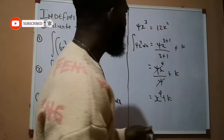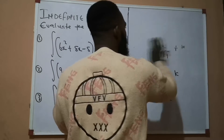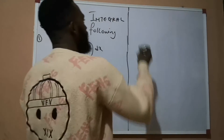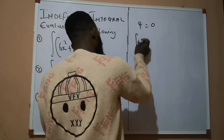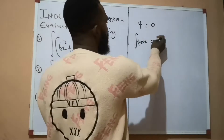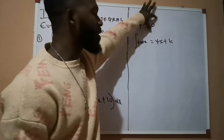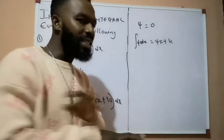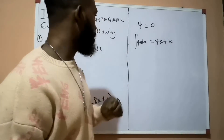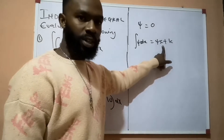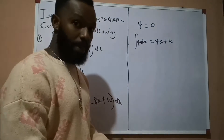In differentiation, if you differentiate a constant — for example 4 — the result is zero, because 4 is a constant. But if you integrate 4, the answer becomes 4x plus k. When you differentiate a constant the result is zero, but when you integrate a constant, the answer is the constant times x plus k. For instance, if I integrate 10 it becomes 10x plus k. If I integrate 20 it becomes 20x plus k, and so on.